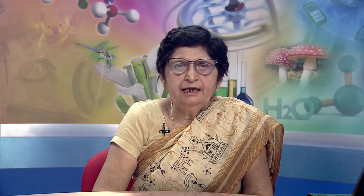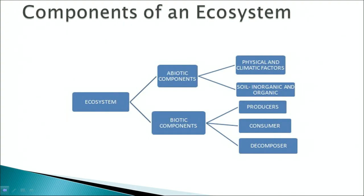The biosphere and biomes are huge and cannot be studied as a single entity. Therefore, we can study the ecological interactions in a small pond ecosystem. This is an example of a pond ecosystem showing its various components. The components of an ecosystem can be divided into two: abiotic components and biotic components.